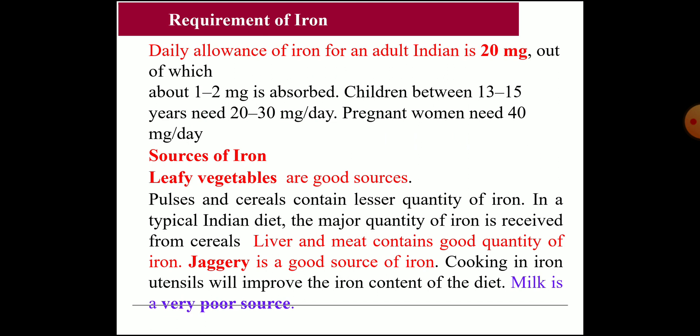What are the sources? Iron sources can be vegetarian or non-vegetarian. Vegetarian sources are mainly green leafy vegetables, pulses, and cereals. Pulses and cereals contain slightly less iron than vegetables, but as part of Indian culture we consume more cereals, so we get iron through them as well. Non-vegetarian sources — mainly liver and meat — are rich in iron. Jaggery is another good source; that is why porridges with added jaggery are given to children. Cooking in iron utensils also improves iron content in the diet.